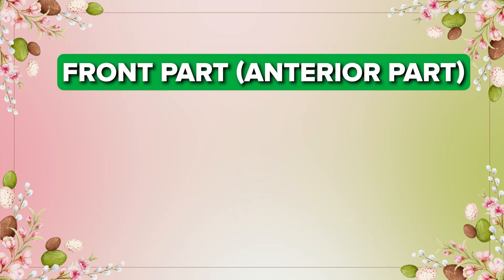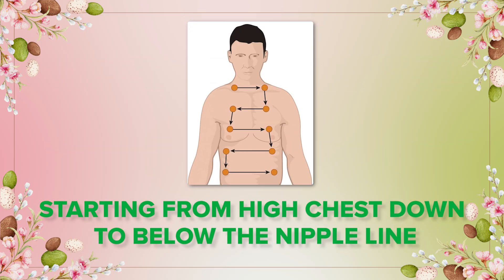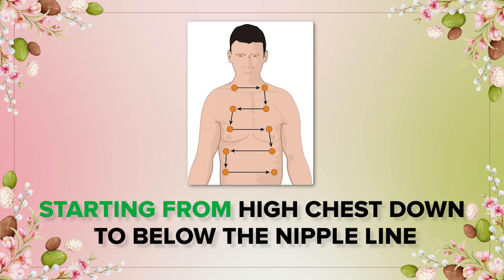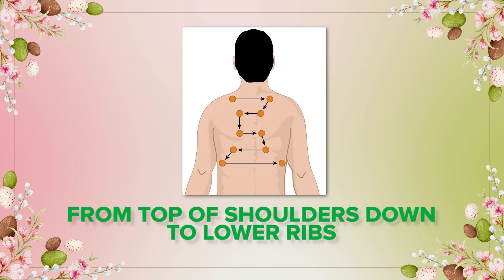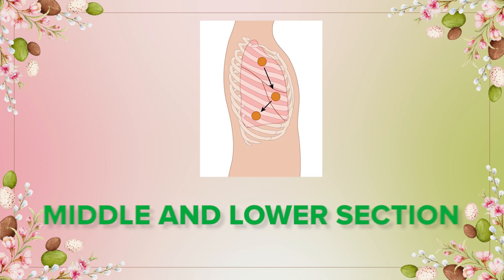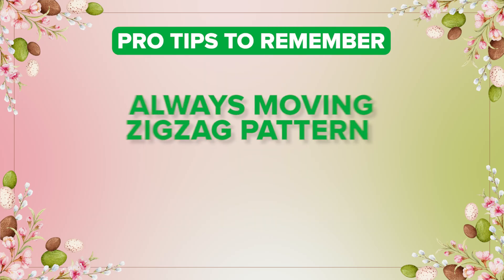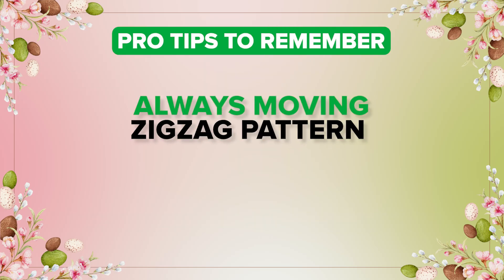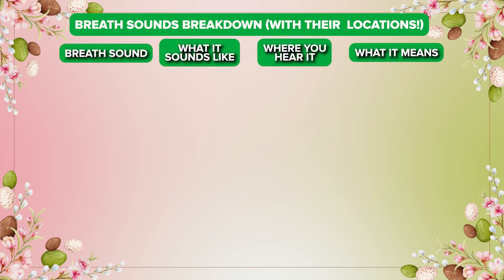Now, where to place your stethoscope: on the front, the anterior part, we have six spots to listen, starting from the high chest down to below the nipple line. On the back, the posterior part, we have eight spots from the top of shoulders down to the lower ribs. On the side, lateral part, we have two spots per side — middle and lower section. Always move in a zigzag pattern, comparing left to right.